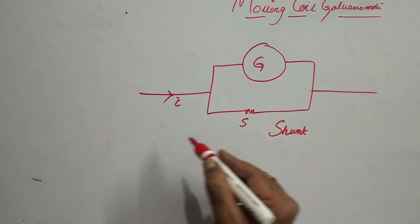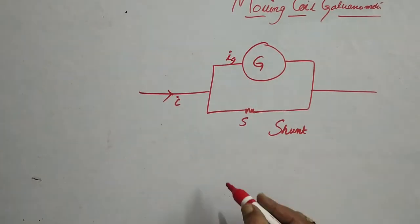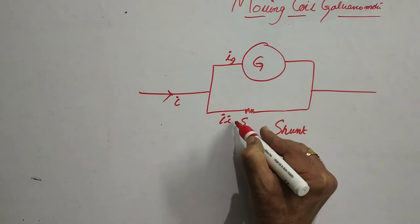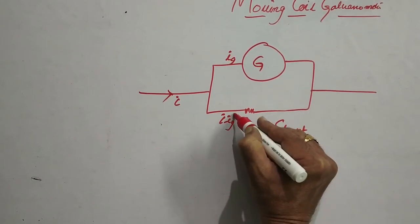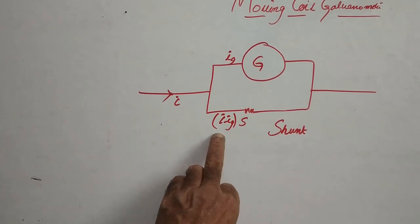If I current is coming over here and IG is passing through the galvanometer and remaining current according to Kirchhoff's junction law, I minus IG will come through this shunt.